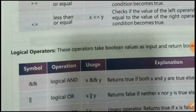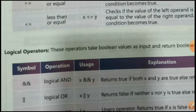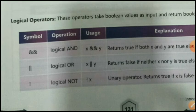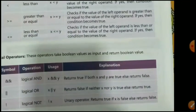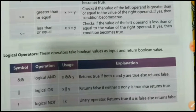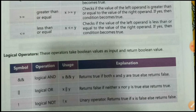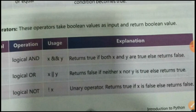Next are logical operators. These operators take boolean values as input and return boolean values. 'and' (&&) is logical AND — returns true if both x and y are true, else returns false. 'or' (||) is logical OR — returns false if neither x nor y is true, else returns true. '!' is logical NOT — returns true if x is false, and returns false otherwise.